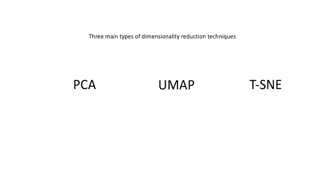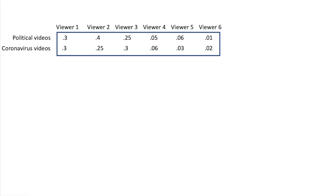This brings us to the topic of dimensionality reduction. As I stated before, there are really three main types of dimensionality reduction techniques commonly used in single cell RNA-seq analysis: PCA, UMAP, and TSNE. Right now I want to focus on principal components analysis, as this is the easiest to understand. A lot of people make a big fuss whenever they first learn PCA, but as I will show you in the next few slides, this process is not that complicated.